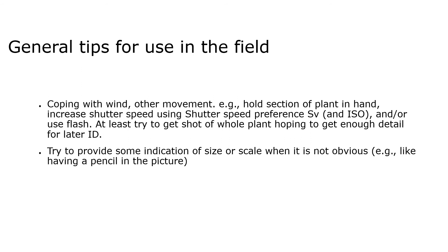Coping with wind and other movement: hold a section of the plant in hand if you can. Alternatively, increase your shutter speed using the shutter speed preference (SV), change your ISO upward, and/or use a flash. At least try to get a shot of the whole plant, hoping to get enough detail for a later ID. Try to provide some indication of size or scale when it is not obvious — for example, having a pencil or backpack in the picture.